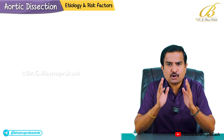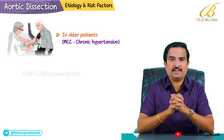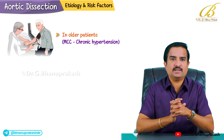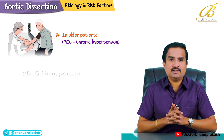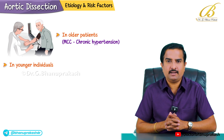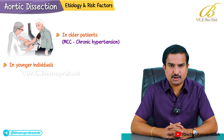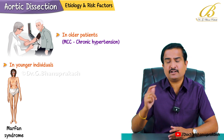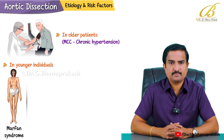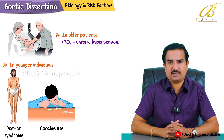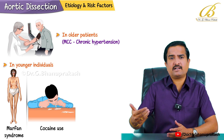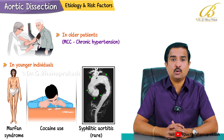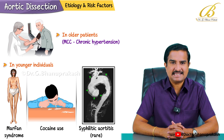The most common cause of aortic dissection is chronic hypertension, especially in older individuals. In younger individuals, particularly under 40, connective tissue disorders like Marfan syndrome are more likely culprits. Another significant risk factor is cocaine use, which can cause a sudden spike in blood pressure. Rare conditions like syphilitic aortitis can also lead to aortic dissection, but this is now uncommon with modern treatment for syphilis.